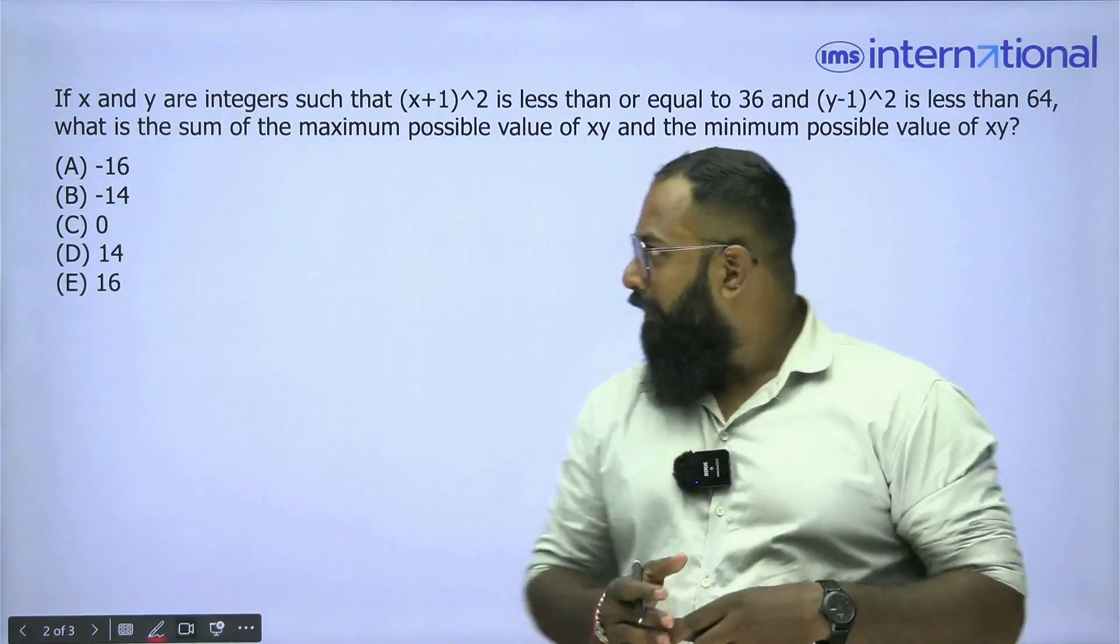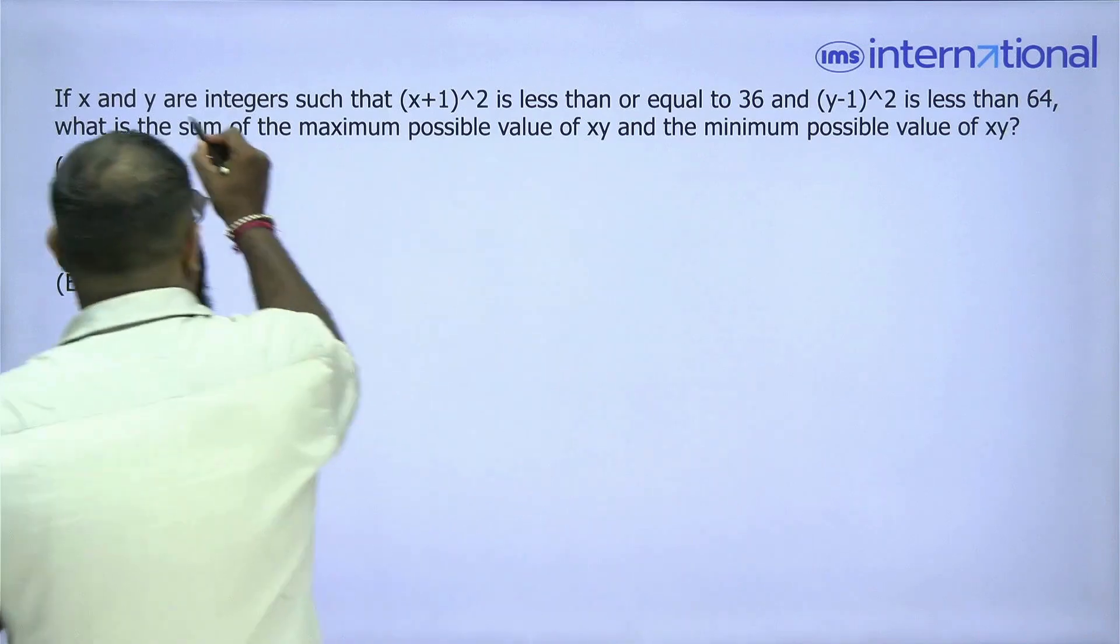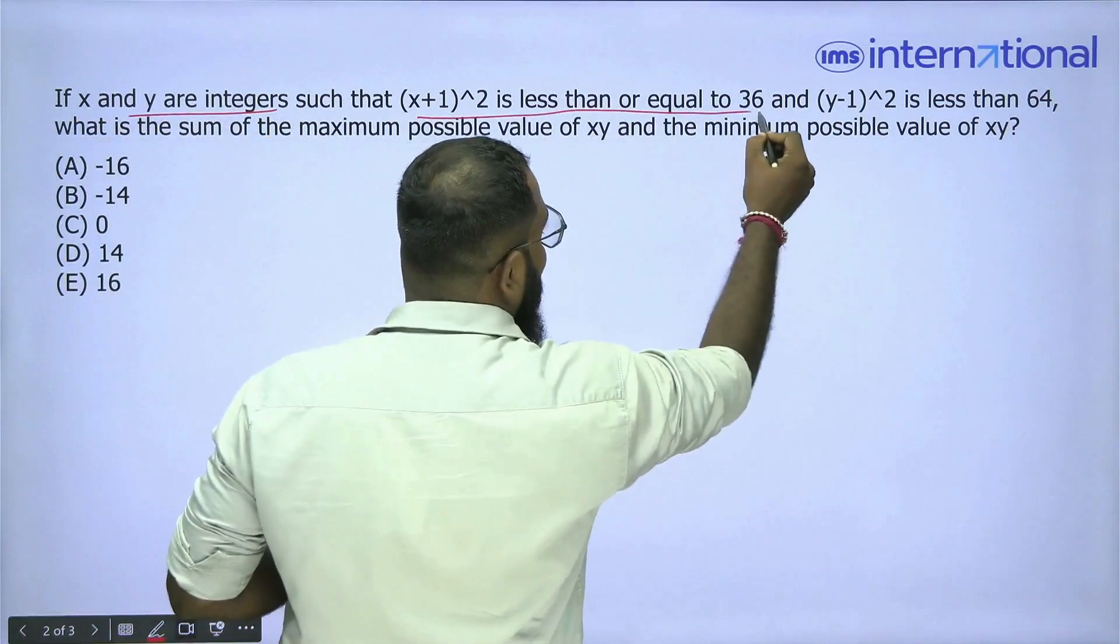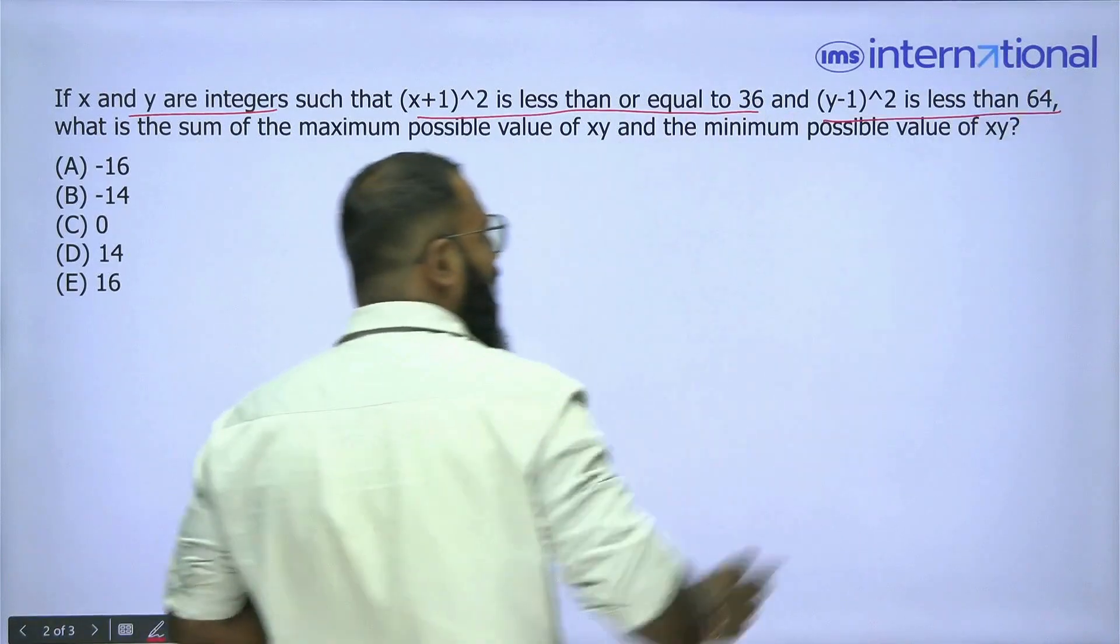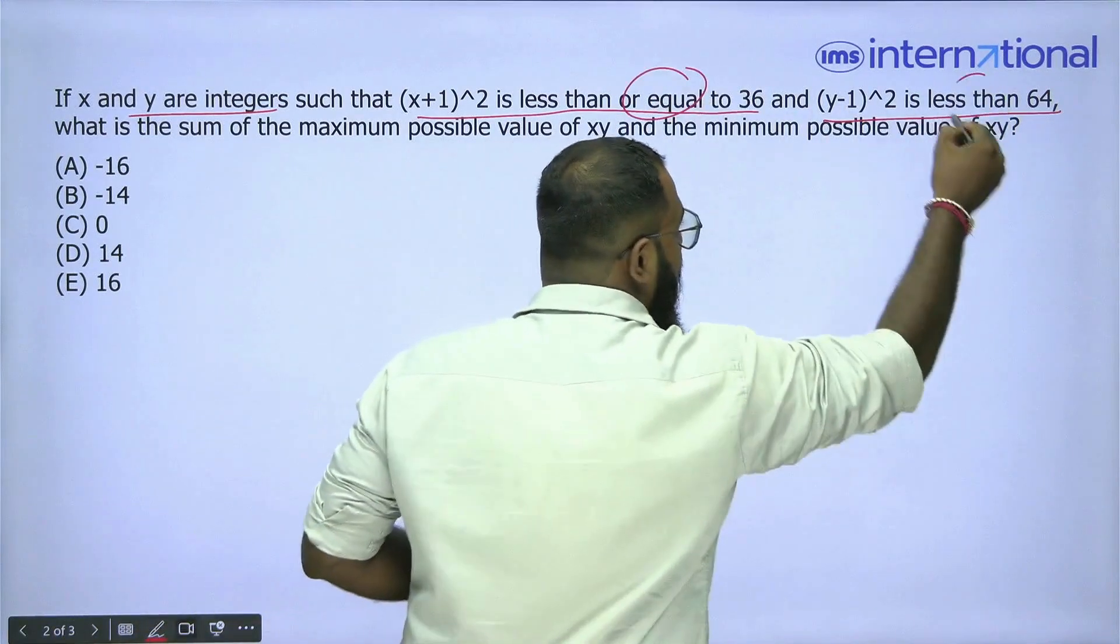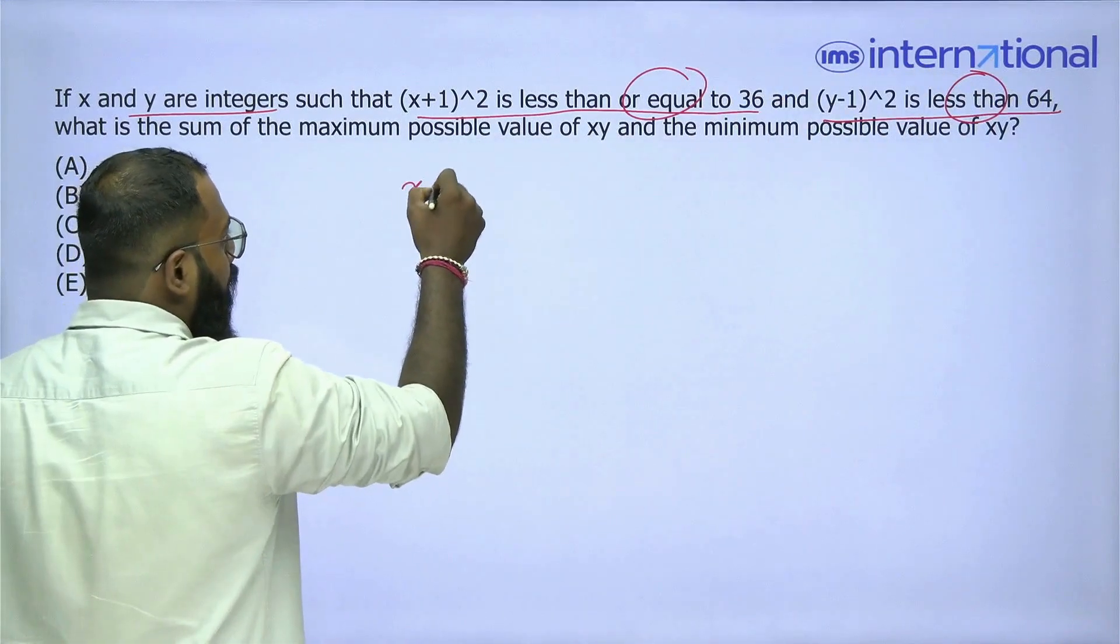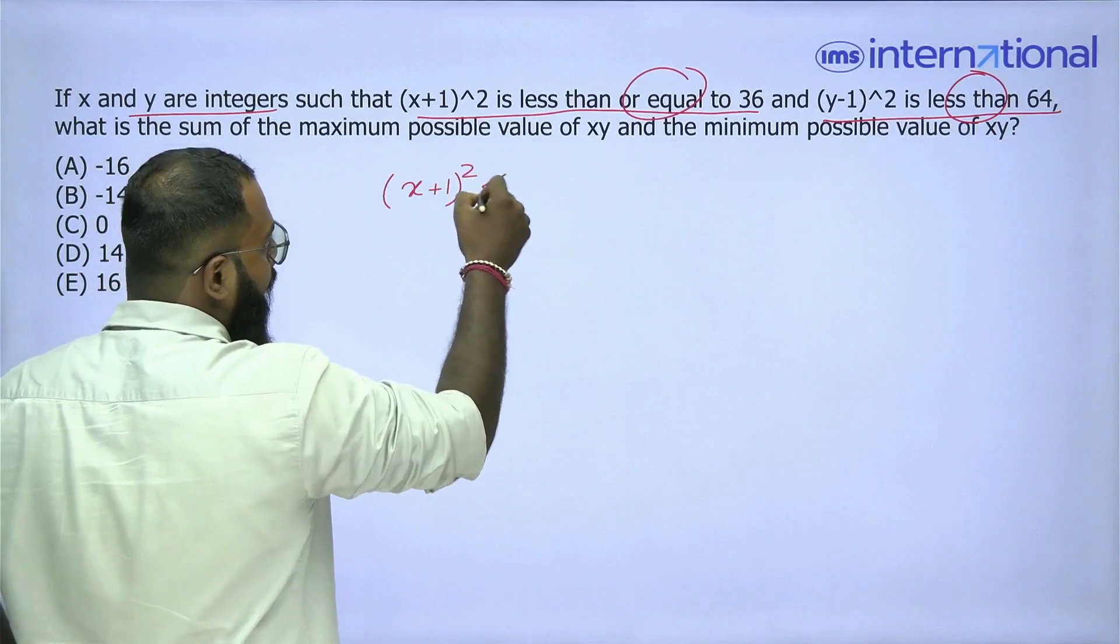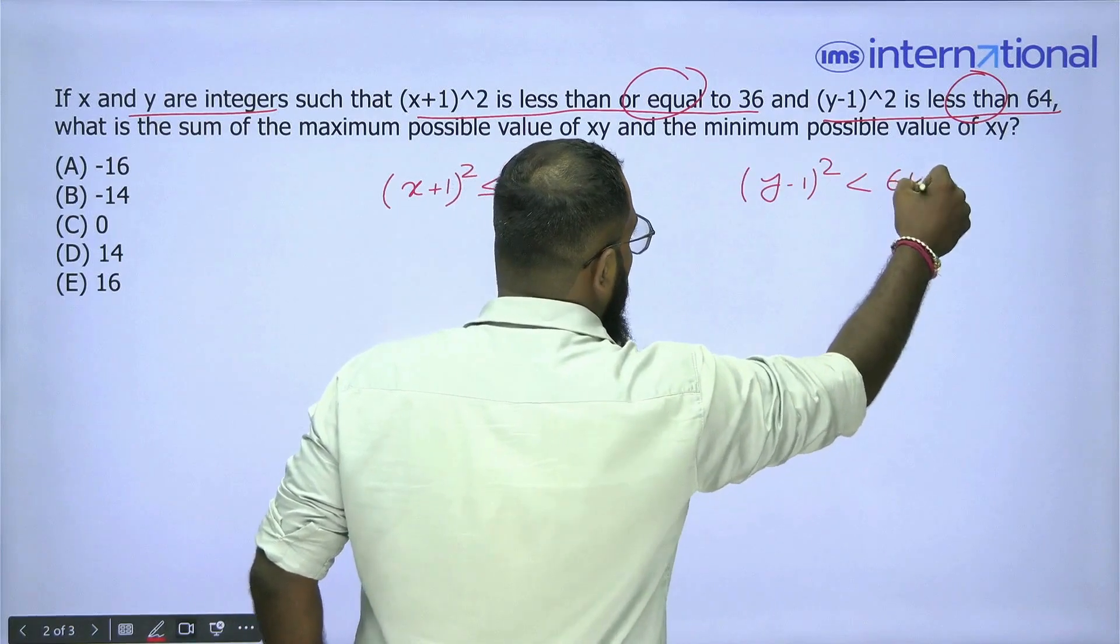So let's try to solve this question together. If x and y are integers such that (x+1)^2 is less than or equal to 36 and (y-1)^2 is less than 64. The basic difference is we don't have any kind of equality in the next statement. Let's write it down: (x+1)^2 is less than or equal to 36, and (y-1)^2 is less than 64.